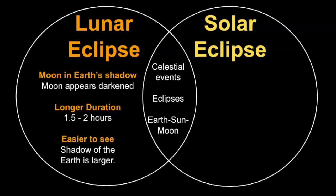Now, they're different in the sense that the moon is in the Earth's shadow for a lunar eclipse. So the moon appears darkened and sometimes it has that burnt orange color to it. It's also longer in duration. From start to finish, it can take between one and a half to two hours. It's also much easier to see because the shadow of the Earth is larger.